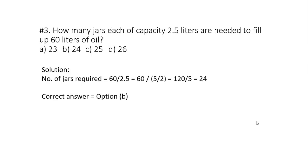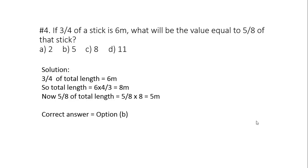Question 3: How many jars, each of capacity 2.5 liters, are needed to fill up 60 liters of oil? Well, this question doesn't need much discussion, it's pretty easy. The capacity of each jar is 2.5 liters and we need to find the number of jars that will be required to fill up 60 liters. So number of jars will be 60 divided by 2.5. On simplification we get 24, so the right option is B.